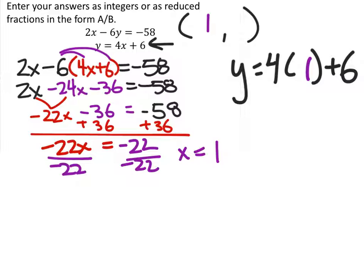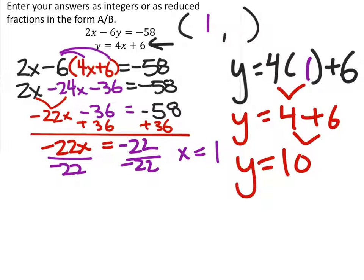So y equals 4 times 1 plus 6. 4 times 1 is 4 plus 6. This is going to be our y value. 4 plus 6 is 10. So we have y equals 10, which goes here in the coordinate pair right there.